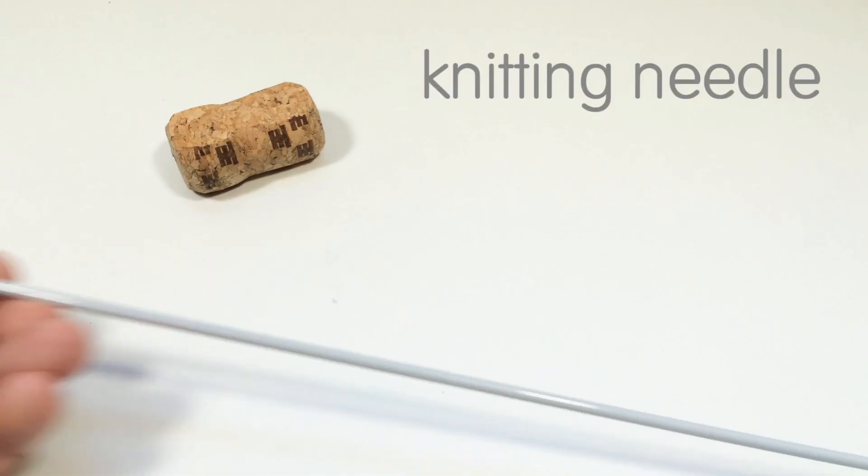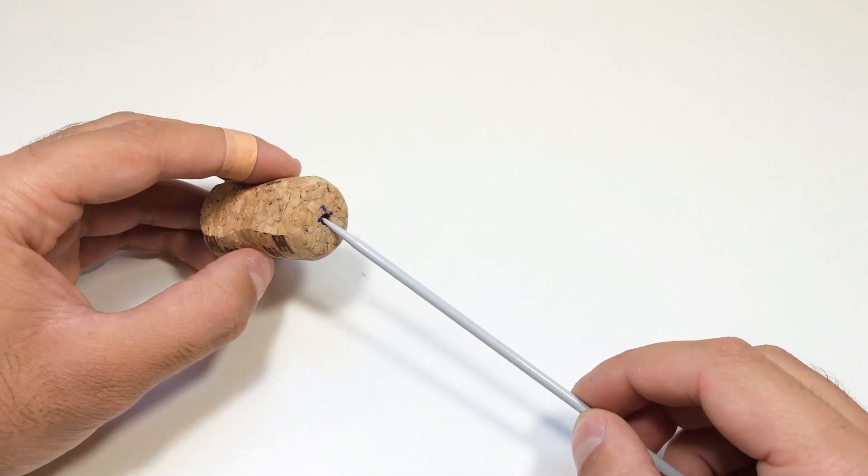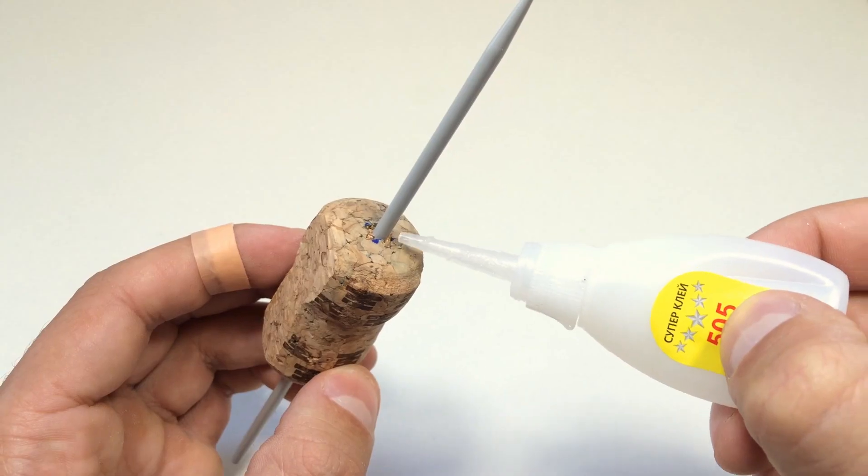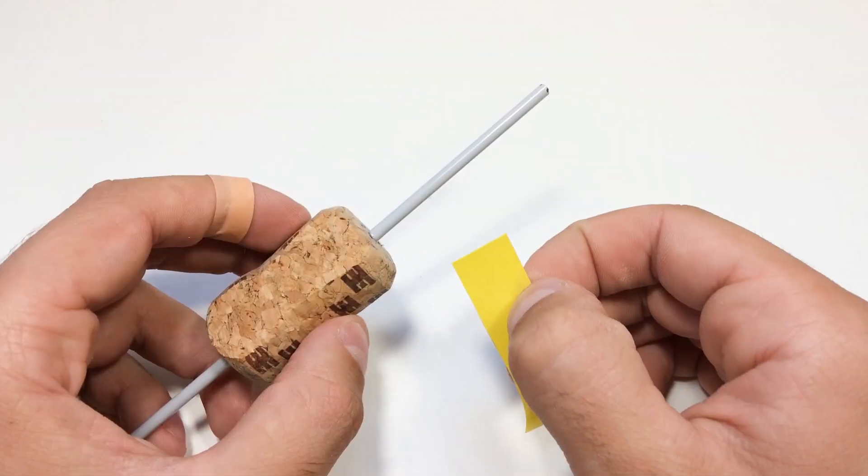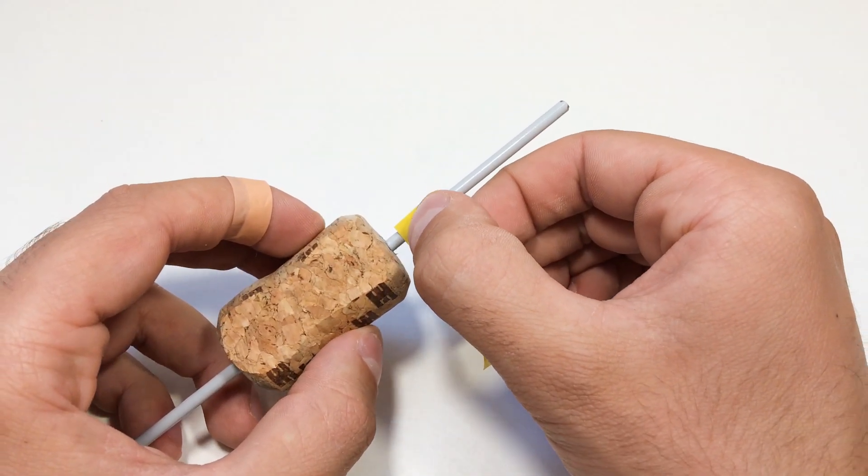Then we need a knitting needle. We put this knitting needle in the hole and fix it with super glue. Then we wind electrical tape on the knitting needle.